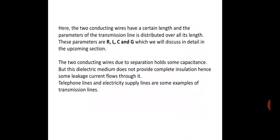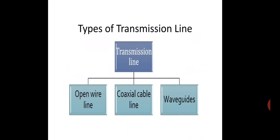Telephone lines and electrical supply lines are some examples of transmission lines. Transmission lines are of three types: open wire lines, coaxial cable lines, and waveguides. Open wire lines are used for domestic and industrial purposes — basically two conductors separated from each other by a dielectric, with one end connected to the source and another to the destination. Coaxial cable lines are used in telecommunication where high voltage and high signals are involved. Waveguides are used for ultra-high frequencies where the signal frequency is in gigahertz.